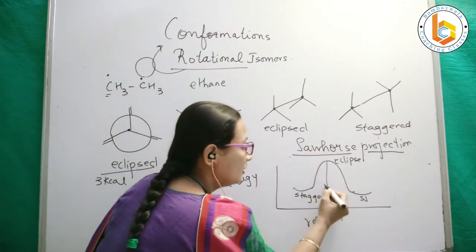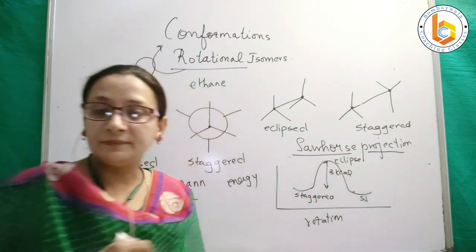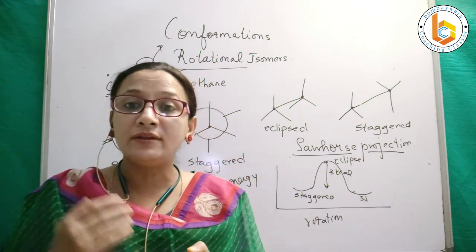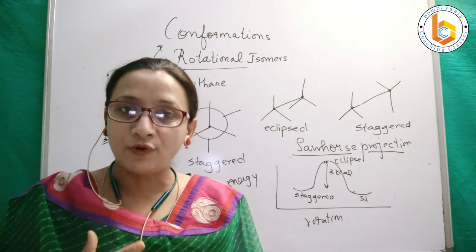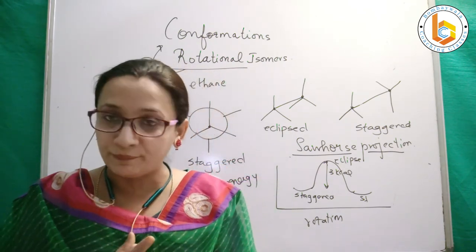The difference is not much—it is just 3 kilocalories. We should know which form is more energetic: that is the eclipsed form. And which form is less energetic and more stable: that is the staggered form.